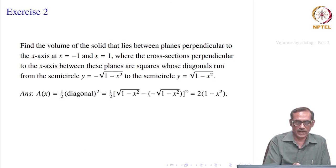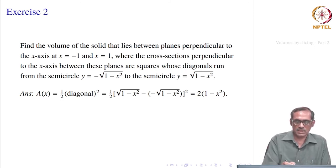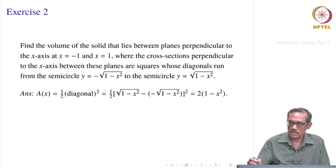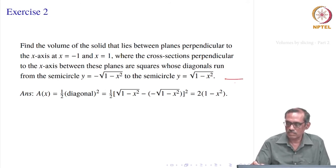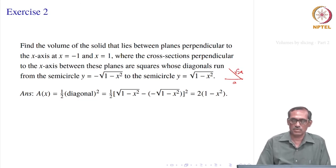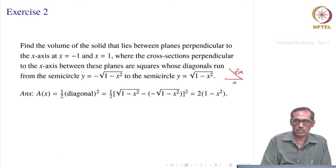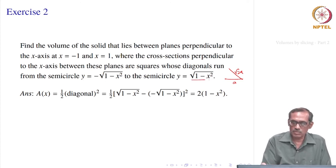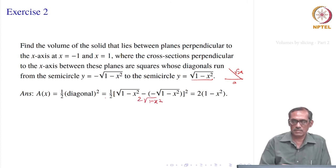It is a simpler one — squares whose diagonals run from the semicircle y = −√(1 − x²) to the semicircle y = √(1 − x²). So it is a square whose diagonals are of this type, not the sides. We want to find the area of that cross section. Since it is a square, its area equals half times the diagonal squared, because if the side is a then the diagonal is √2·a, so a square's area is half the diagonal squared.